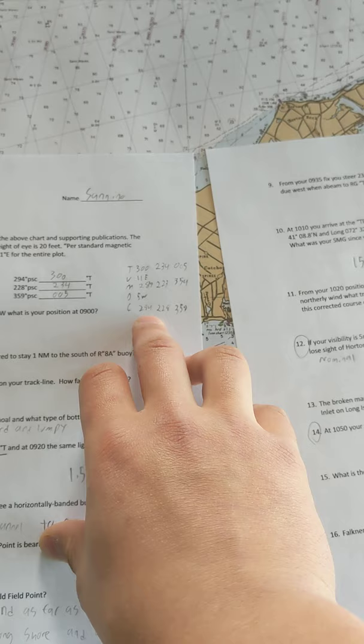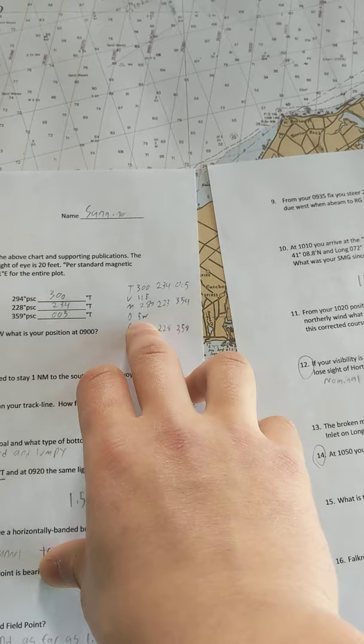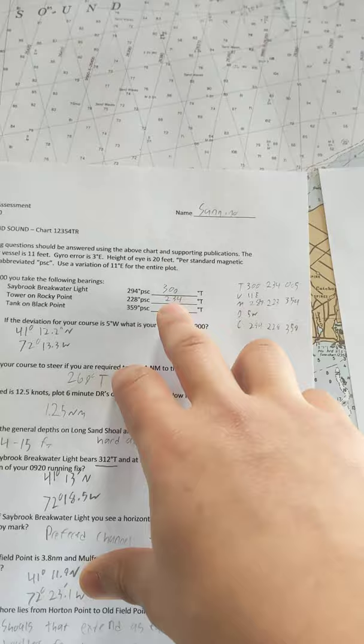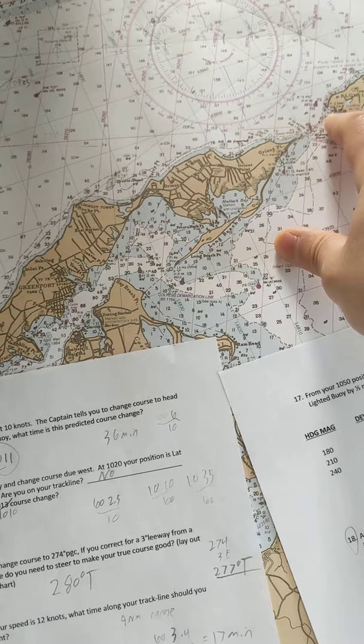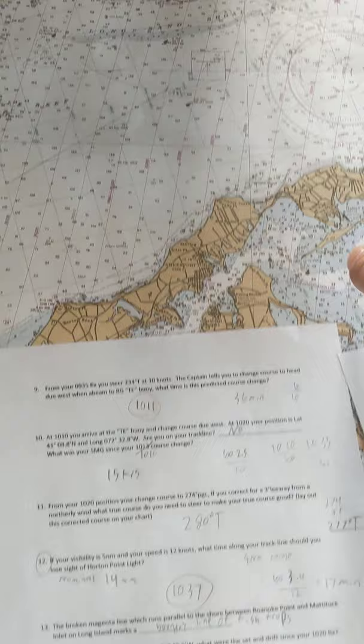To find my initial position of 0900, I had to take the per standard compass headings I was given and do the proper corrections of subtracting 5 degrees west and then adding 11 degrees east to find my true heading. I then took each true heading and found each position, each point, and used those bearings to find my initial position.